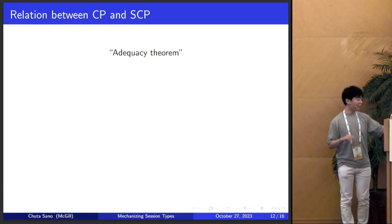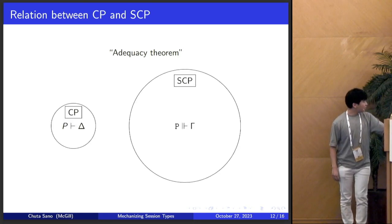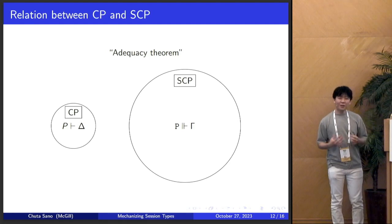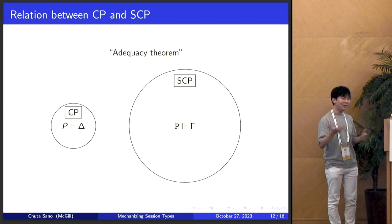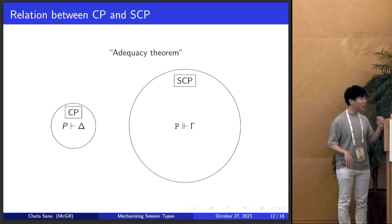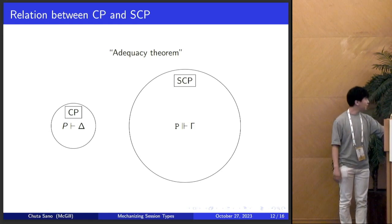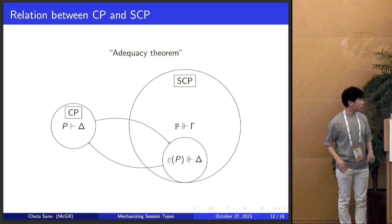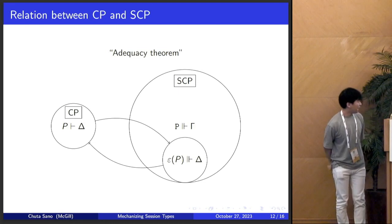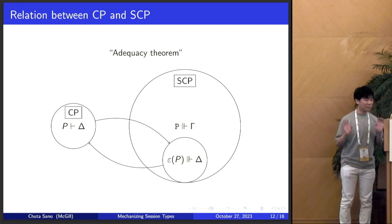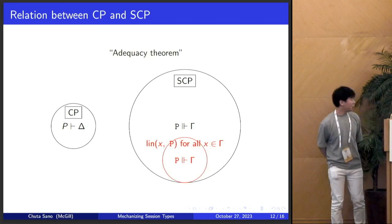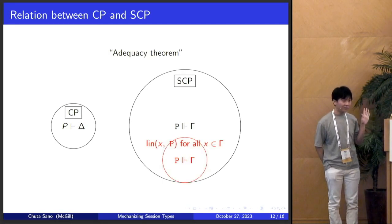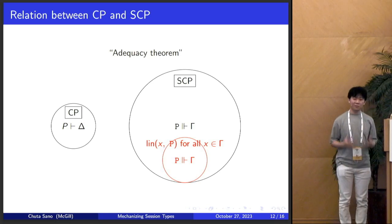To make this all formal, we have an adequacy theorem which states that our linearity predicate really captures linearity. Graphically, SCP is bigger than CP because it has contraction and weakening, so it types more things. You can go back and forth between a subset of SCP and CP, and the key point is that we can characterize that subset with the condition that everything in the context satisfies the linearity predicate — confirming that the linearity predicate really does capture linearity.